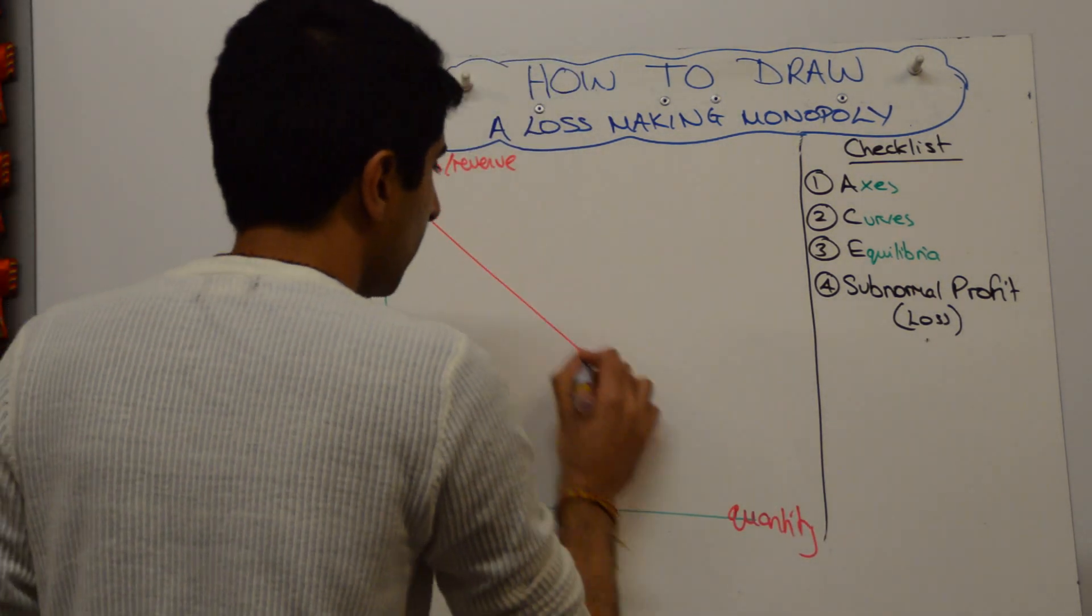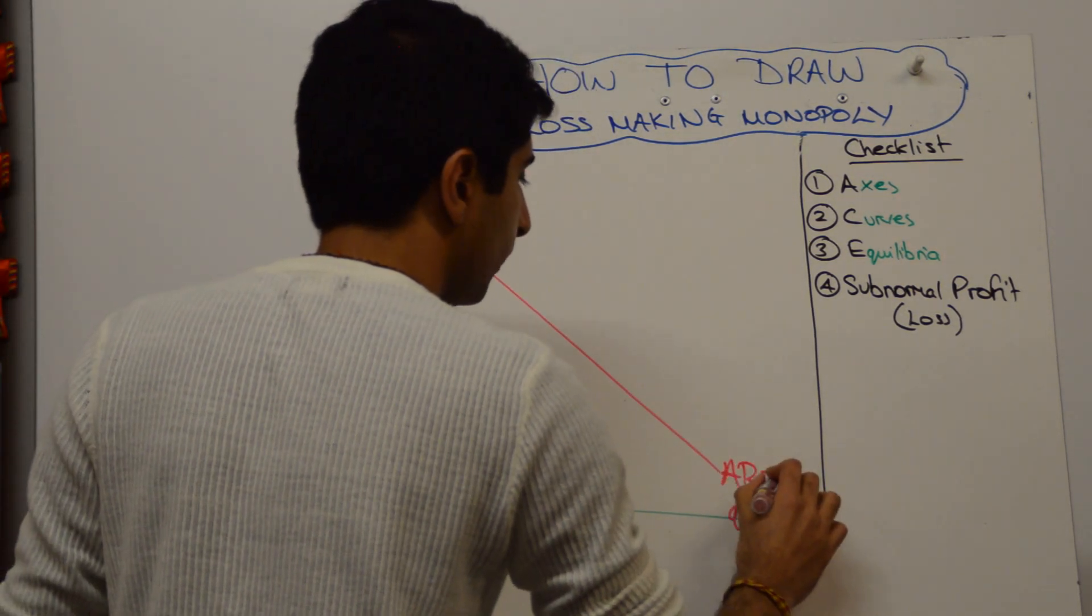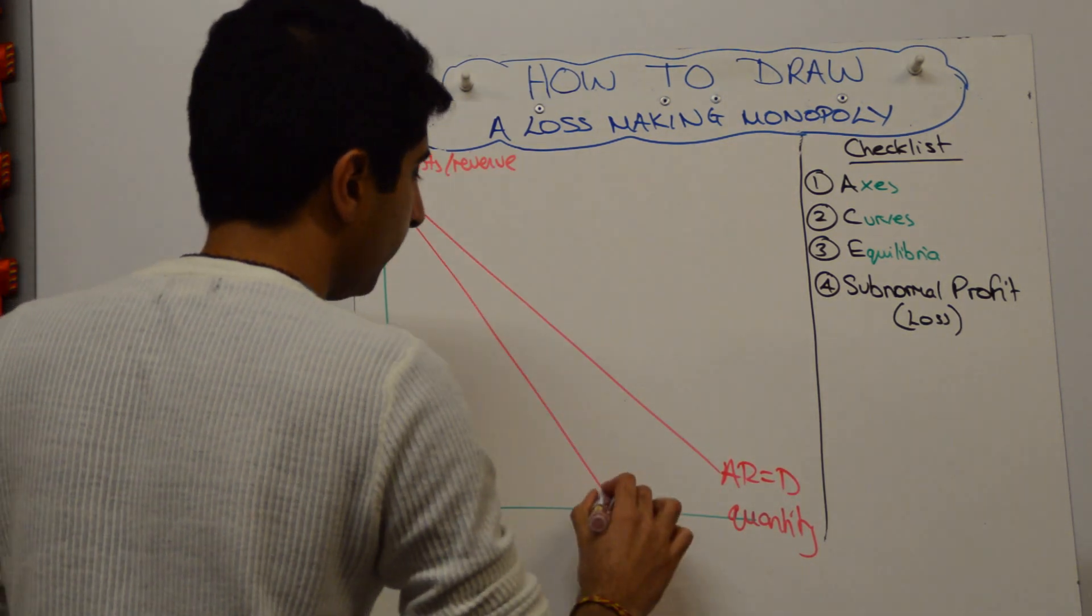Then draw your revenue curves. So we'll draw AR, which is equal to D, then MR, twice as steep.